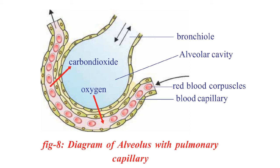Now the blood leaves the carbon dioxide and takes oxygen from the alveoli. After that, the blood changes to a bright red color, which indicates it is rich in oxygen. This oxygen-rich bright red blood is then pumped to all parts of the body, and the carbon dioxide present in the alveoli is pushed outside in the process of expiration.